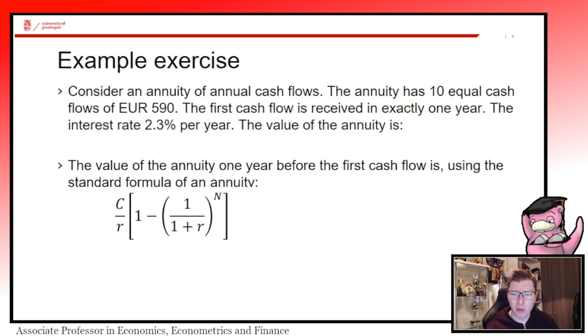What we can do is simply just take the standard formula. Look on the screen, we put on the formula, we just attach all the numbers there. So C is now 590, R is now converted properly into decimal numbers 0.023, and we raise it to the power 10. Put all this in and we get an amount of EUR 5,217.